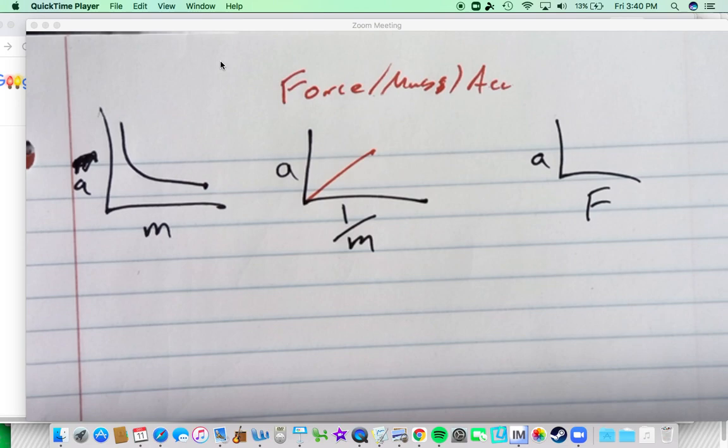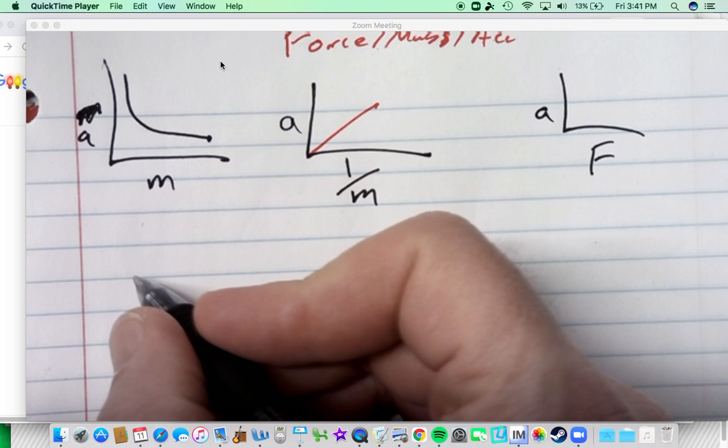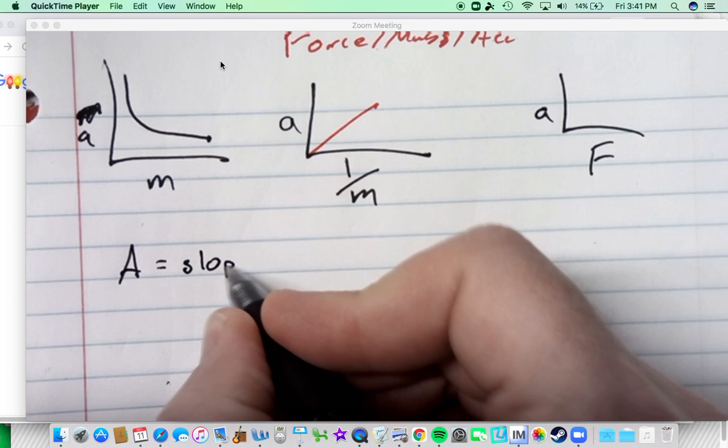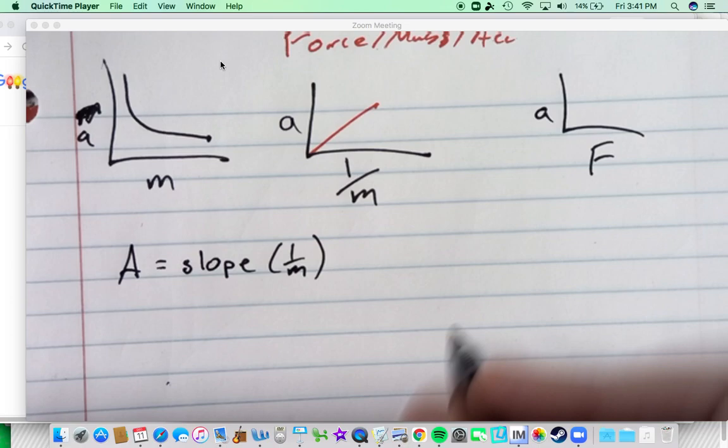Again, as you watch this you can look at your data on the Google slide to follow along to see how it worked. But essentially we came up with the model: acceleration, which I'll just use A, is equal to the slope times one over the mass. And so what we did then was looked at the Google slide and we noticed that for some groups, not all,